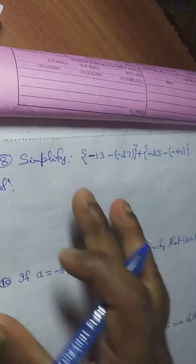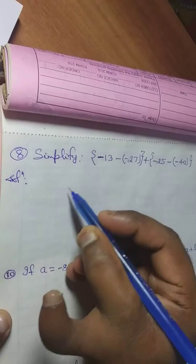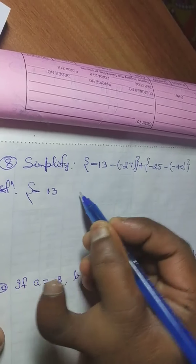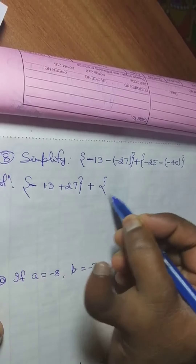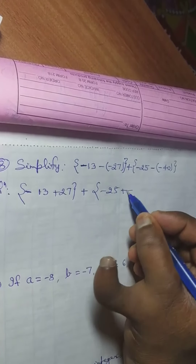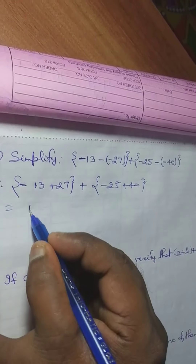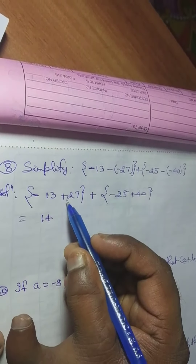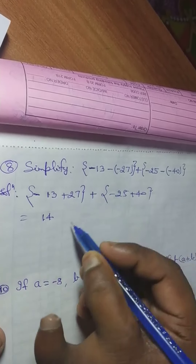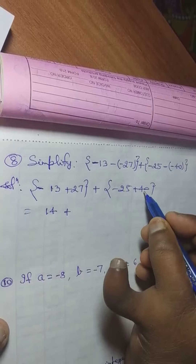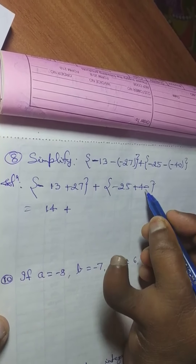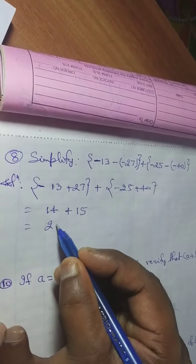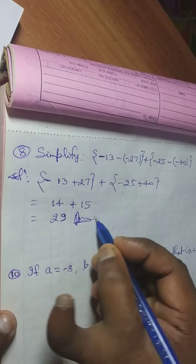Simplify question number 8: 13 minus minus 27 plus 25 minus minus 40. Since 27 is greater and has a positive sign, we write positive; and since 40 is greater than 25 and plus is given before 40, we write plus sign. The answer is in positive sign.